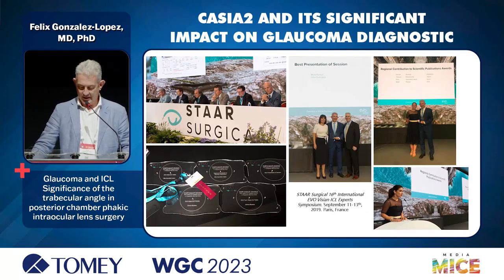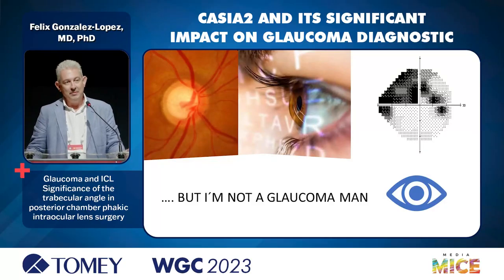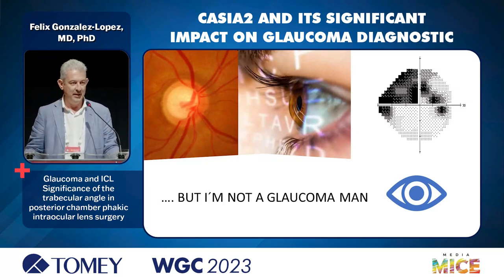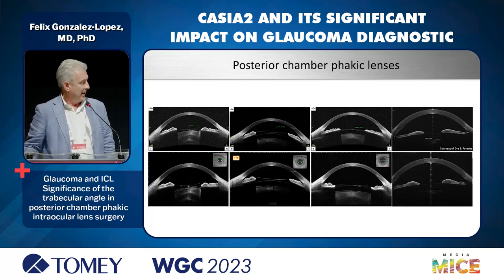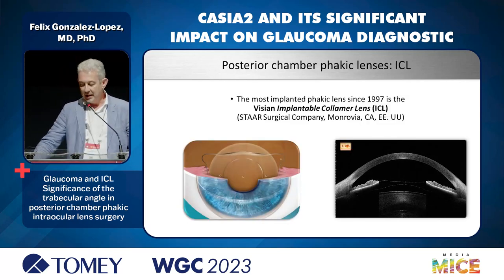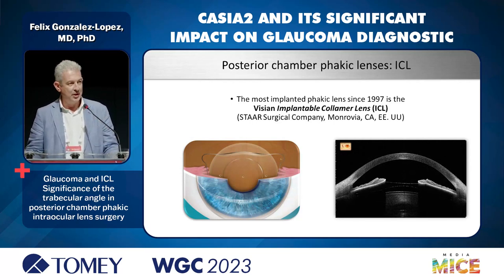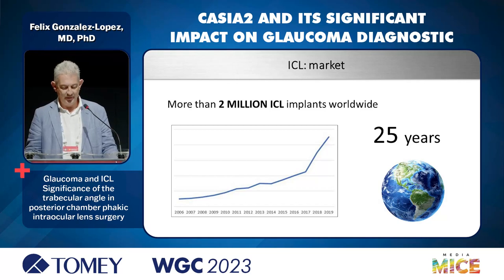Let me introduce the posterior chamber phakic lenses. I will focus on the ICL — the Implantable Collamer Lens — the most implanted phakic lens since 1997, made by STAAR Surgical from the United States, with more than 2 million implants worldwide over the last 25 years. A 2016 paper in Ophthalmology projected we will have one billion highly myopic people worldwide by 2050 — so the trend is toward more and more myopia.